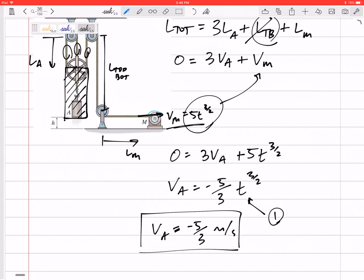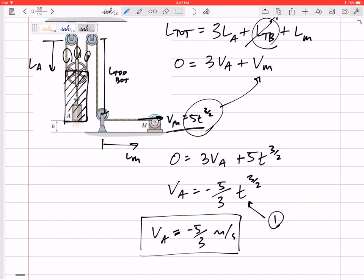What does that negative mean? Just means that it is inward. You know, if positive is outward, negative is inward, so this is up, 5/3 meters per second, right there.